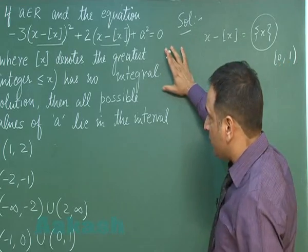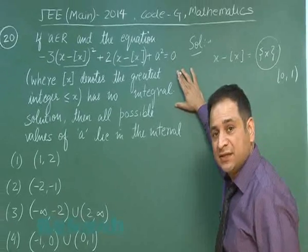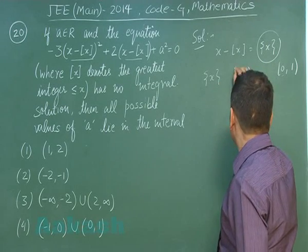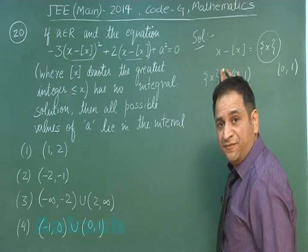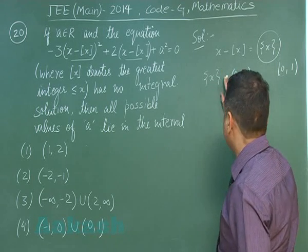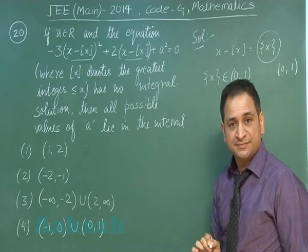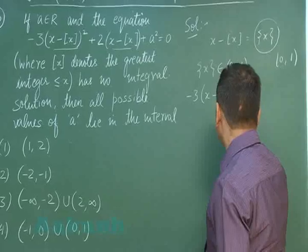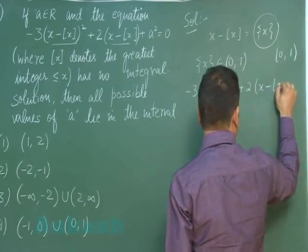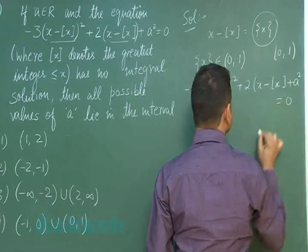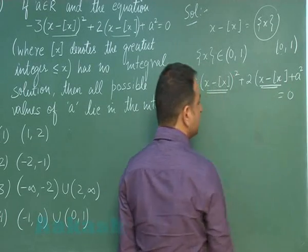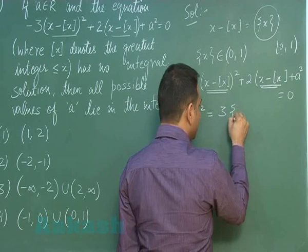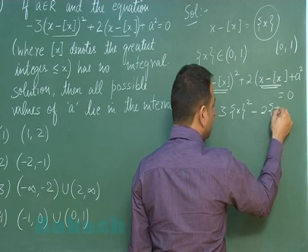According to this problem, we do not want any integral solution, so we restrict the fractional part of x to the open interval (0, 1) — it will not take the value 0 since x is not an integer. Taking the fractional part as the variable, we rewrite the equation: a² equals 3 times (fractional part of x)² minus 2 times (fractional part of x).